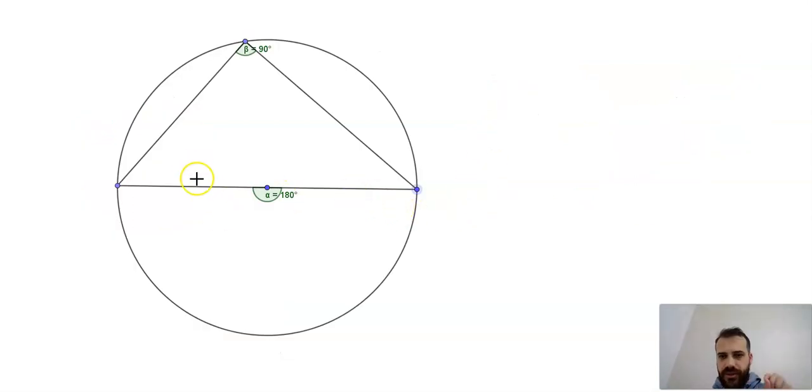This is the one you're familiar with, the semicircle - 180 degrees. We're going right across the diameter, and it doesn't matter where we put this point, we get a 90-degree angle.